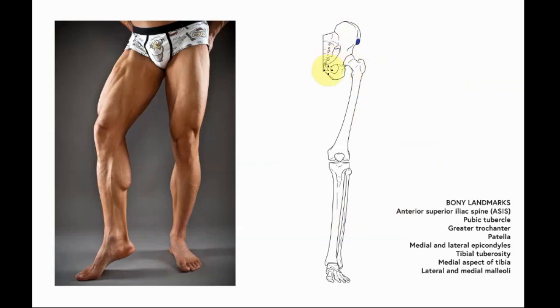Our pubic tubercle, that'll be just lateral to the pubic symphysis that connects the two pelvic bones, just on the anterior aspect of the pubis there. The greater trochanter - our trochanters are these two bumps at the proximal end of the femur, the lesser trochanter medially and the greater trochanter laterally.